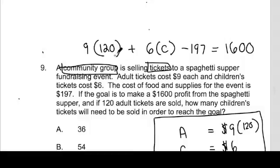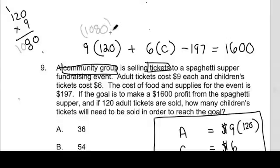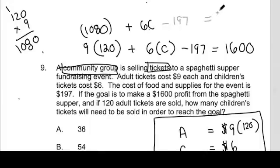And most teachers at this point say, oh, now I know what to do — I do 9 times 120. It's very easy to make a careless mistake with multiplication, so I'm going to do it out. I don't look at this as anything more than making sure I don't make a careless mistake, because it's very easy when you're tired to make these mistakes. So do out the work — don't do it in your head. Plus, this is going to be: 6c minus 197 equals 1,600.